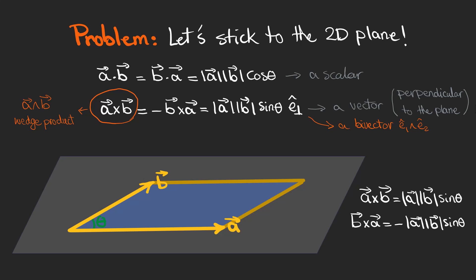So I redefine the cross product as the magnitude of the two vectors times sine theta. So here a cross b is |a| times |b| times sine theta, and b cross a is the same magnitude with a minus sign.